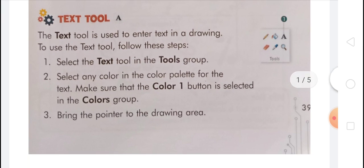The text tool is used to enter text in a drawing. To use the text tool: first, select the text tool in the tools group. Second, select any color in the color palette for the text, making sure the color 1 button is selected. Third, bring the pointer to the drawing area and click and drag where you wish to enter the text — a dotted rectangular box appears with a blinking cursor inside it. The text tab appears on the ribbon, using which you can change the text size, color, and style. Finally, type the text you want.